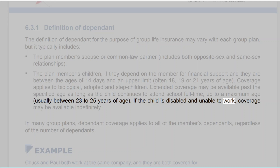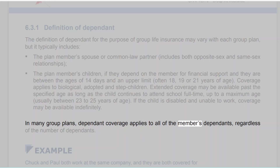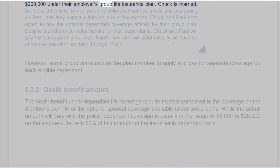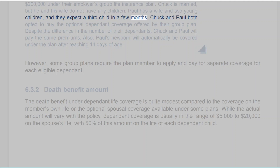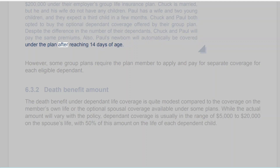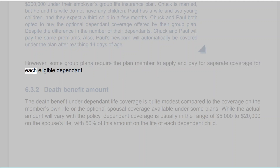In many group plans, dependent coverage applies to all of the member's dependents regardless of the number of dependents. Example: Chuck and Paul both work at the same company and are both covered for $200,000 under their employer's group life insurance plan. Chuck is married but has no children. Paul has a wife and two young children and expects a third. Both opted to buy optional dependent coverage. Despite the difference in the number of their dependents, Chuck and Paul will pay the same premiums. Also, Paul's newborn will automatically be covered under the plan after reaching 14 days of age. However, some group plans require the plan member to apply and pay for separate coverage for each eligible dependent.